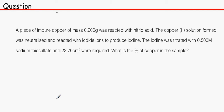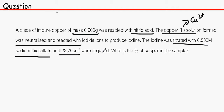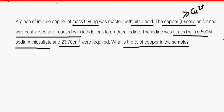Let's put this into context. This question is on page 223 in your OCR book. A piece of impure copper has a given mass and was reacted with acid. The copper(II) solution was neutralized and reacted with iodide ions to produce iodine. The iodine was titrated with sodium thiosulfate and a certain amount was required. What is the percentage of copper in the sample?